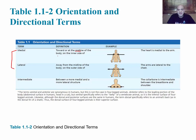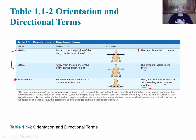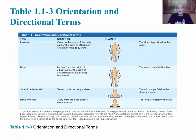Medial means toward the midline of the body or on the inner side, while lateral is the opposite — away from the midline or on the outer side. Example of medial: the heart is medial to the arm. Example of lateral: the arms are lateral to the chest. Another term, intermediate, means between a more medial and a more lateral structure — for example, the collarbone is intermediate between the sternum and the shoulder.